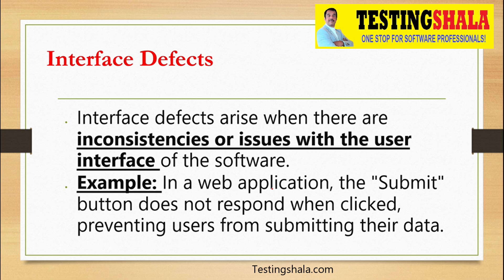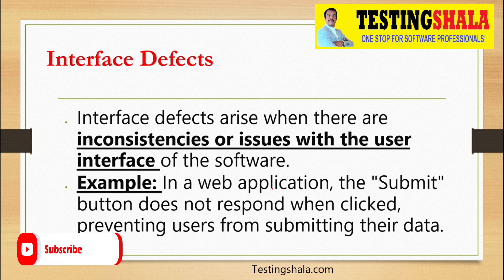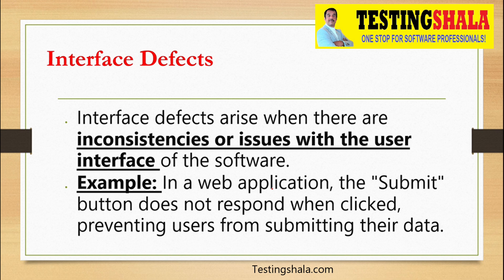The second type is interface defects. Interface defects occur when there are inconsistencies or issues with the user interface or application programming interfaces (APIs). For example, in a web application, if clicking the submit button does not respond, it prevents the user from submitting data. This means the submit button is not interfaced properly with the web application, and that kind of issue is classified as an interface defect.